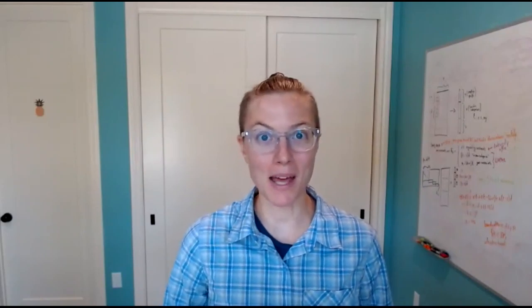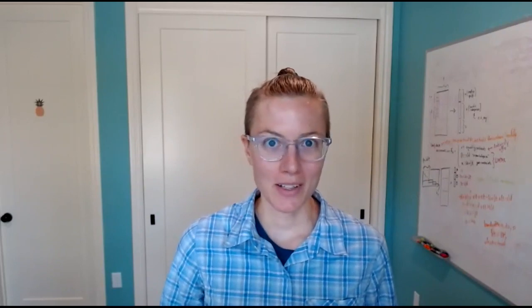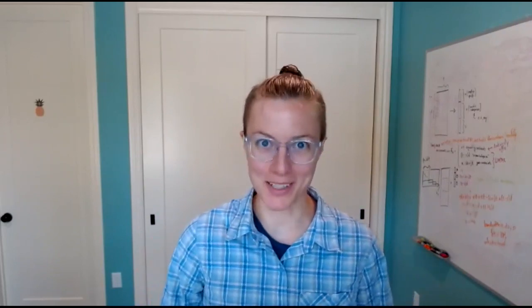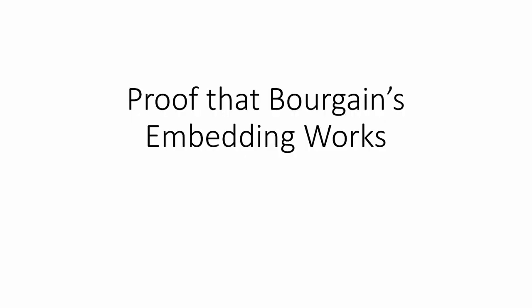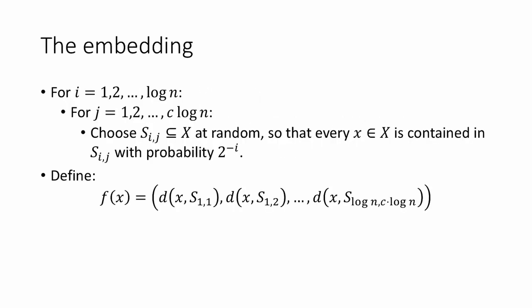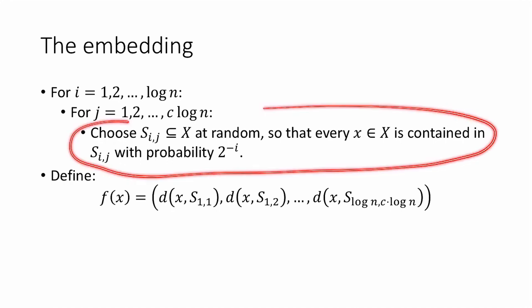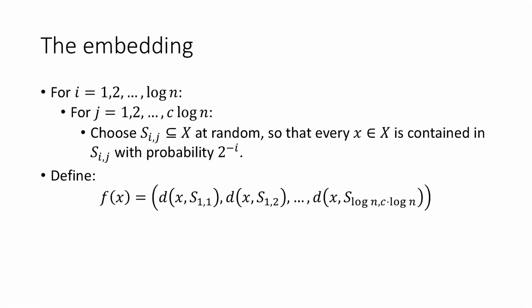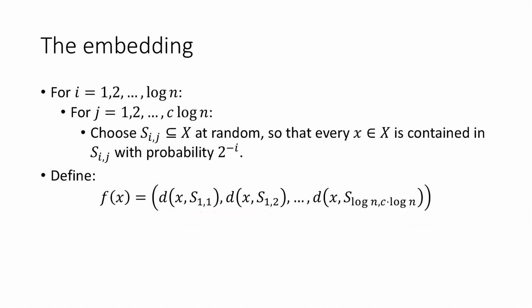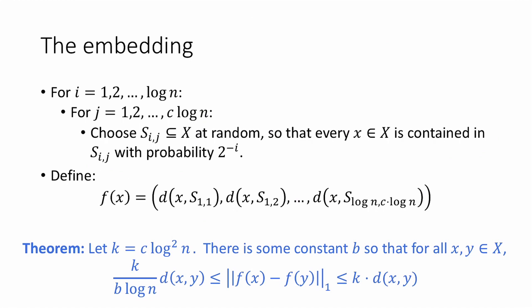In the last video, we saw Bourgain's embedding and an intuition for why it works. In this video, we will actually prove that it works. So recall the embedding from the previous video. The basic idea is that we choose a bunch of random sets S_ij, and then define an embedding map F, which maps x to a big vector of x's distances to each of these sets S_ij. Last time we described what this embedding does and gave some hand-wavy intuition, and now we're going to formally prove it.